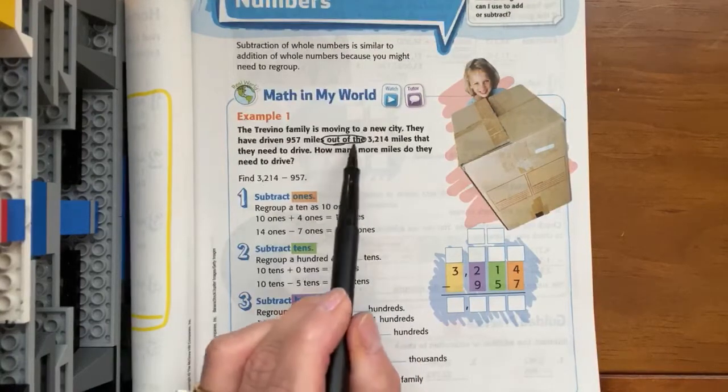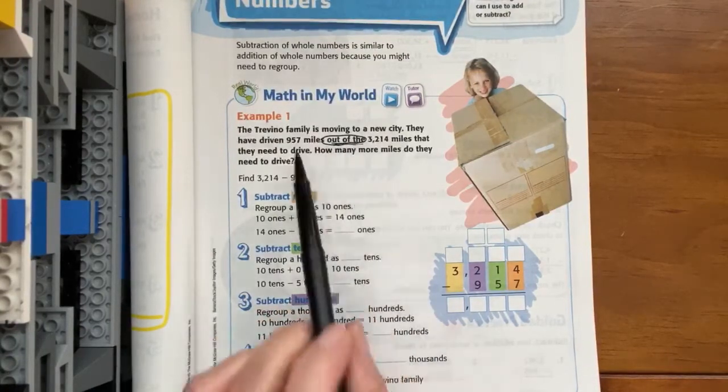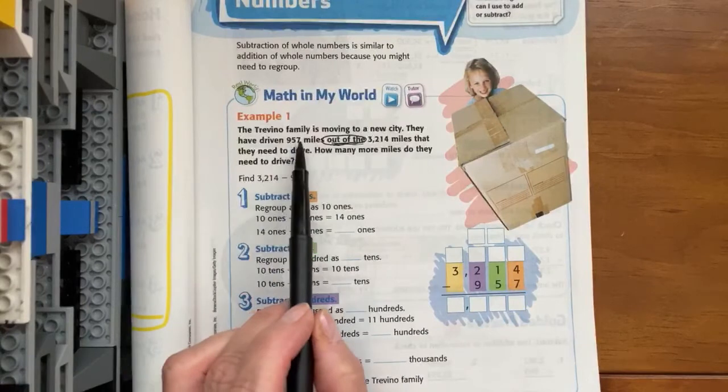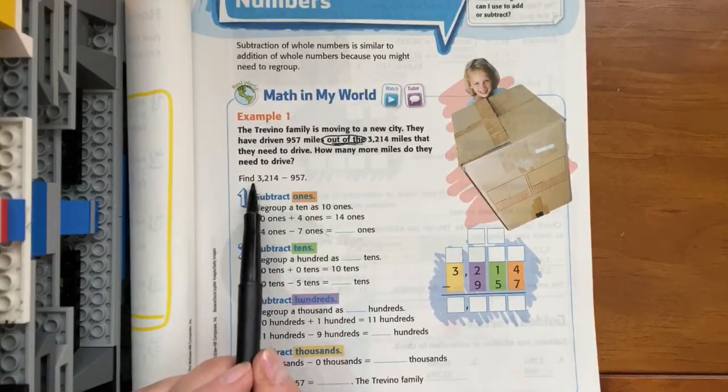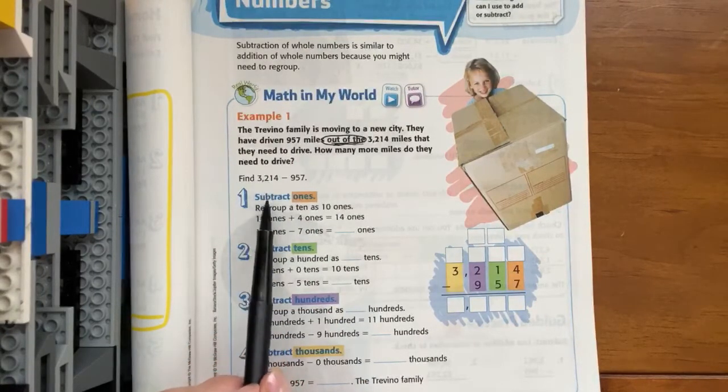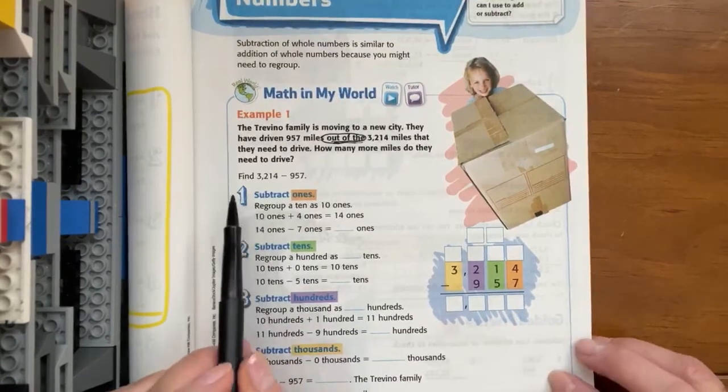So our key words, I've circled right there, out of, we're going to take 957 right out of 3,214. So let's follow the steps.